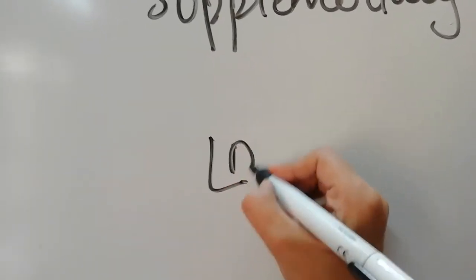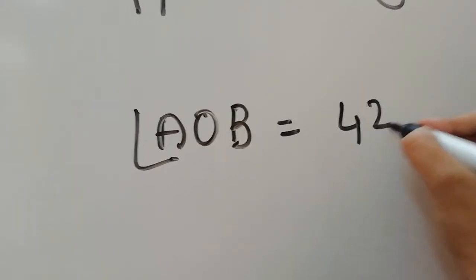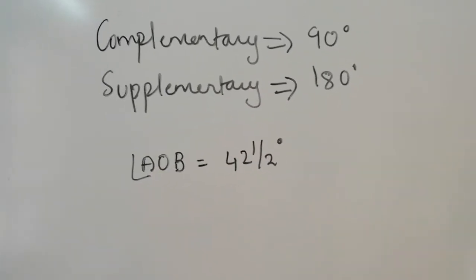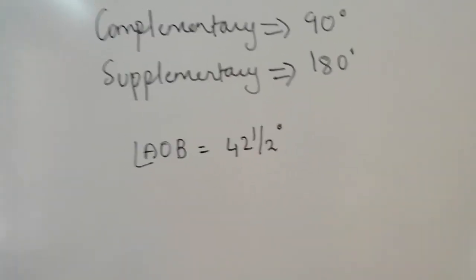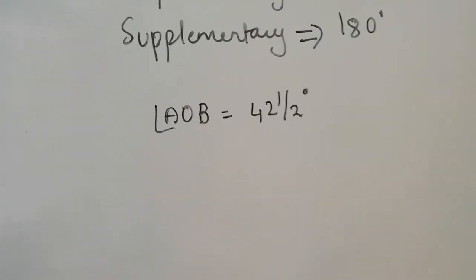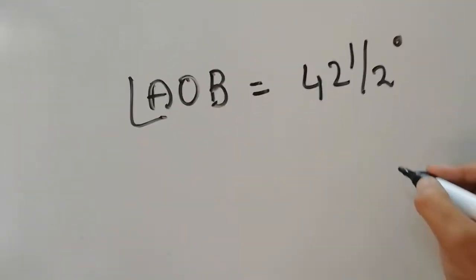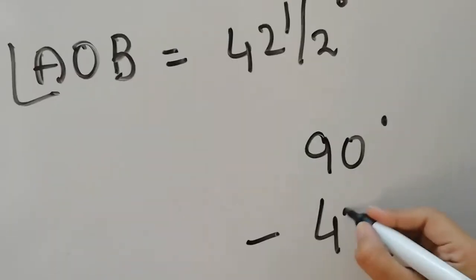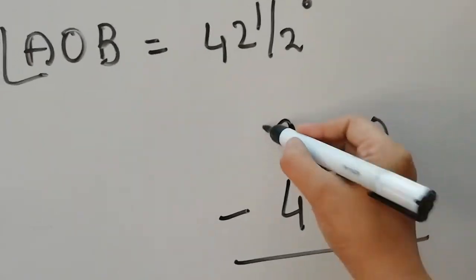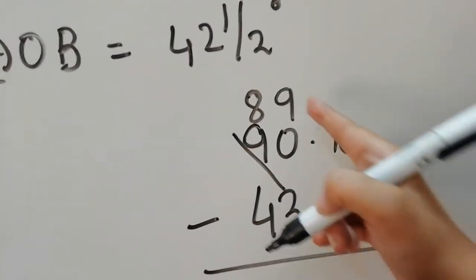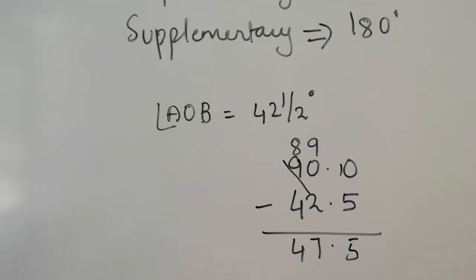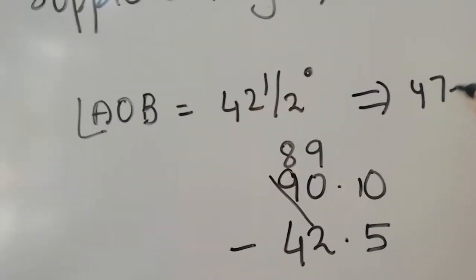If angle AOB is equal to 42.5 degrees, what is the complementary angle to angle AOB? The complementary angle is 90 degrees minus 42.5 degrees. Since I cannot subtract directly, I borrow — 10 minus 5 gives 5, and 9 minus 4 gives 47. So the complementary angle to angle AOB is equal to 47.5 degrees.